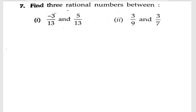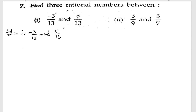Seventh problem: find three rational numbers between -3/13 and 5/13. Let us take the first part. As you can see, the denominators are the same, so we can directly start. The numbers between -3 and 5 — we know that starting from -3/13...